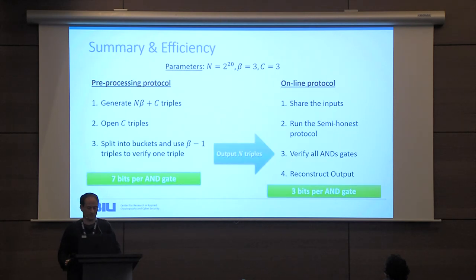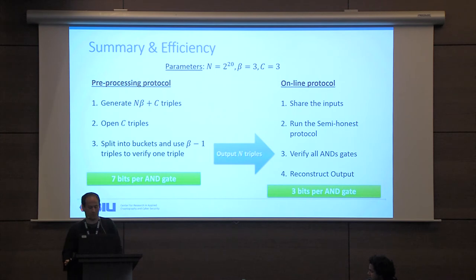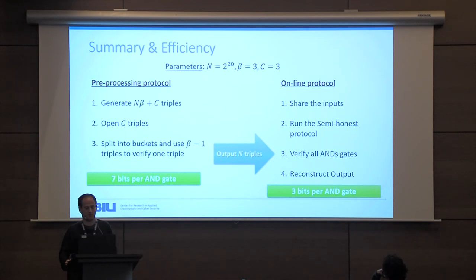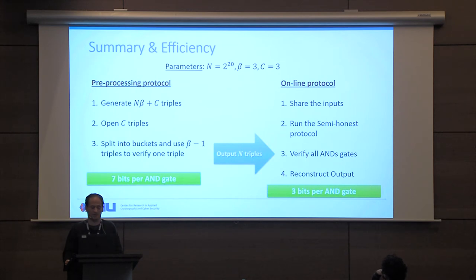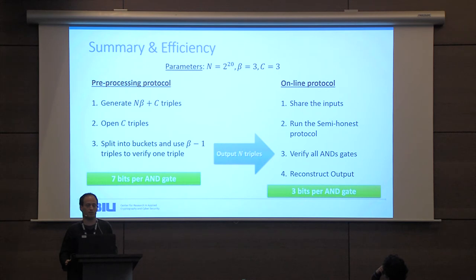Using these exact parameters, the full protocol works as follows. The preprocessing protocol starts by generating n·beta + 3 triples — with these parameters that is three million triples — opens only three triples, splits the remainder into one million buckets, and uses beta minus one = two triples to verify each bucket's first triple, running the verification sub-protocol exactly twice per bucket. The overall communication for preprocessing costs seven bits per AND gate. Combined with the online protocol, the total is ten bits per AND gate per party — a factor of ten blowup over the semi-honest baseline of one bit.